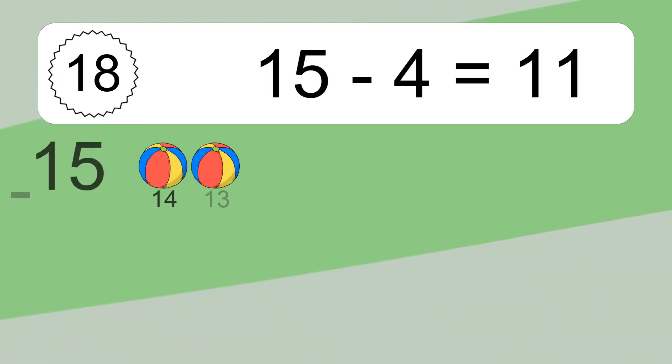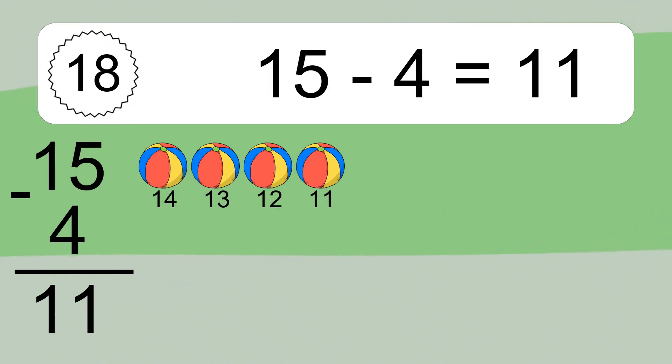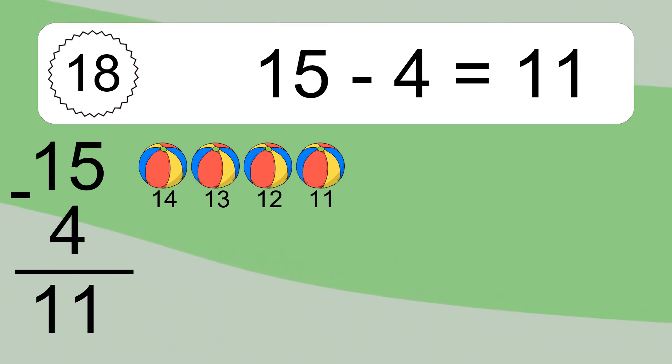15 minus 4 equals what? 15 minus 4 equals 11. Let's count it: 14, 13, 12, 11.